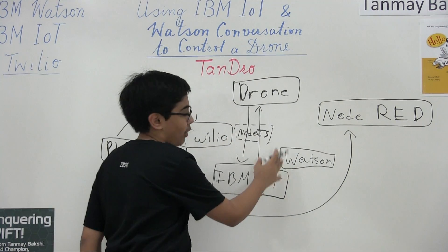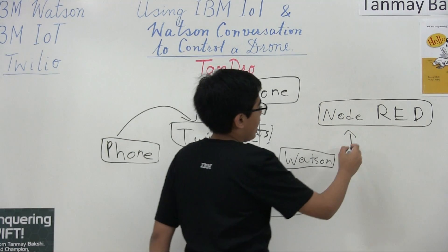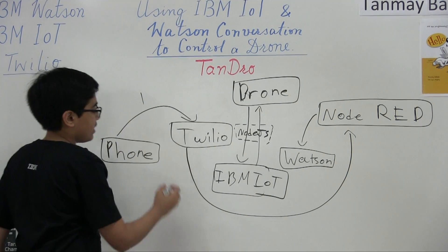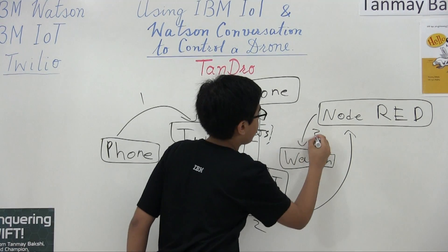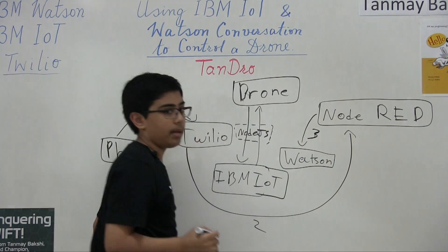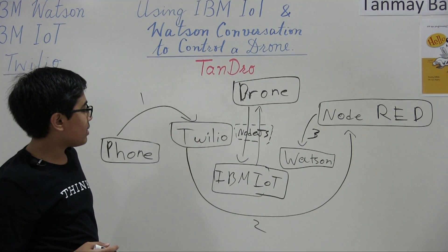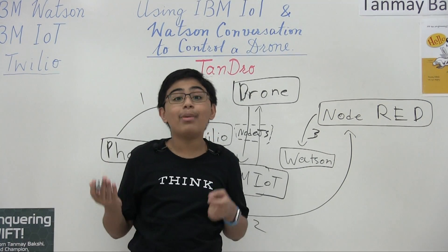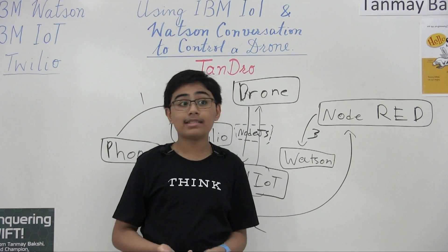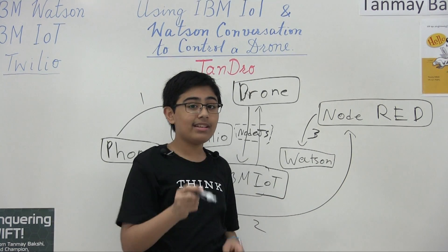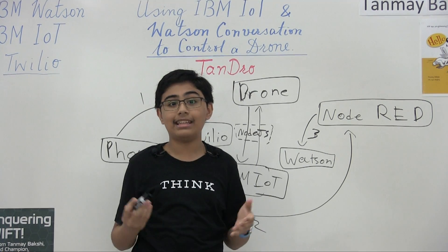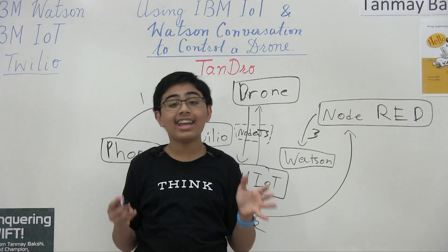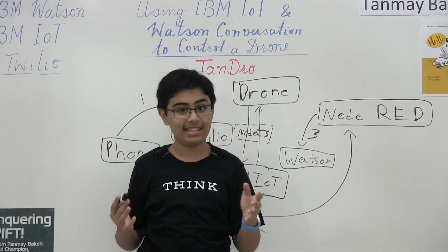Node Red sends the message to Watson Conversation, which understands the intent behind what you wanted to say. For example, if you ask how much battery is left it knows your intent is to find out battery remaining; if you say fire up the engines it knows you want to take off; if you say land it knows you want to land the drone.